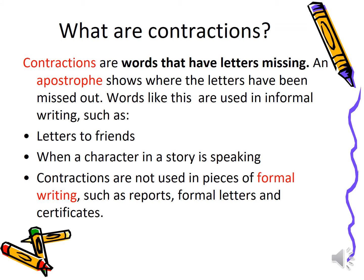So what are contractions? Contractions are words that have letters missing, and an apostrophe shows where the letters have been missed out. Words like this are used in informal writing — such as letters to friends, writing a character's speech in a story, emails, or text messages. Contractions are not used in formal writing. So if you're writing a report, a formal letter, or a certificate, everything's more formal — you don't use contractions as a rule.